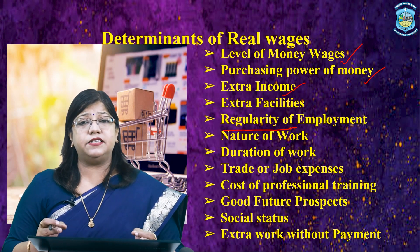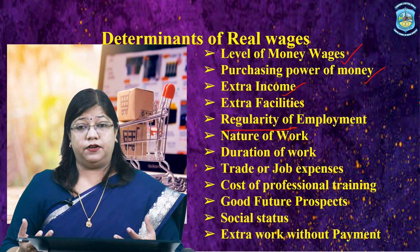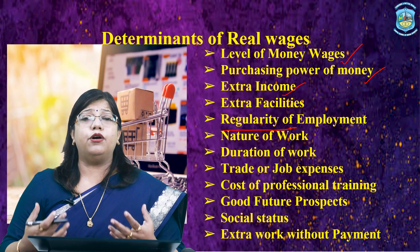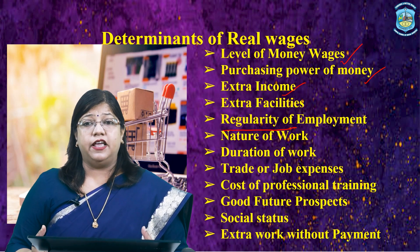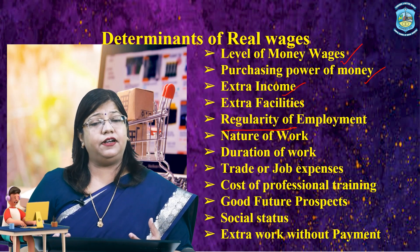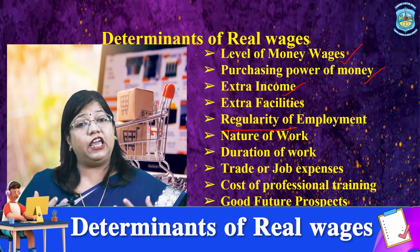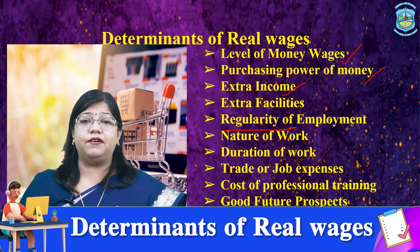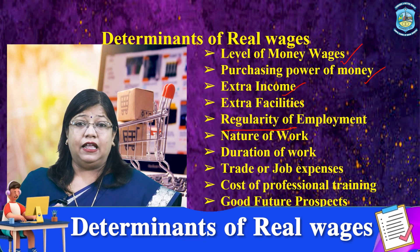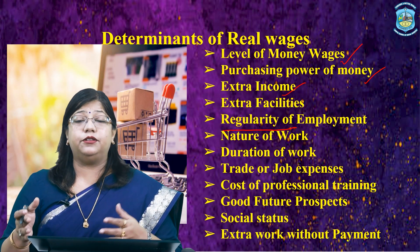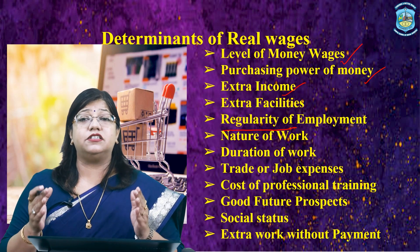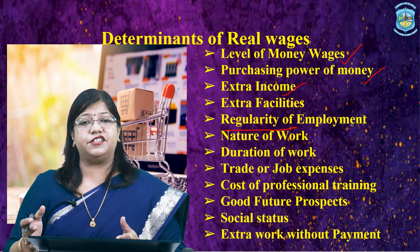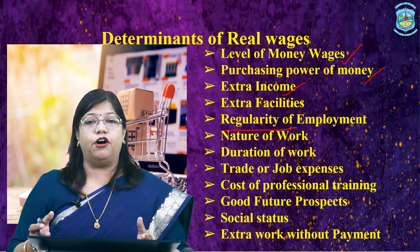Duration of work — hours of work, holidays, etc. — also determines the real wages. If two workers in different industries receive equal money wages, but the working time per day is 5 hours in one industry and 8 hours per day in the other, then the real wages are more in the industry with the smaller duration of work.